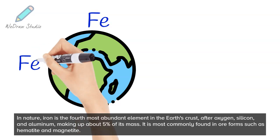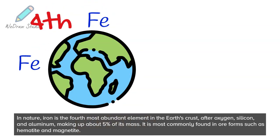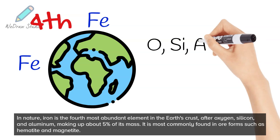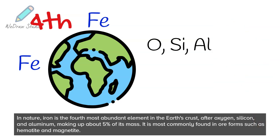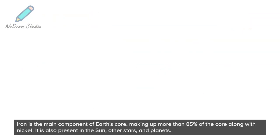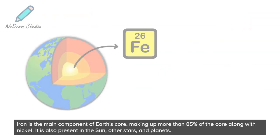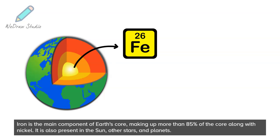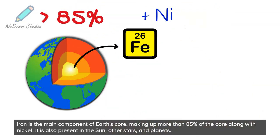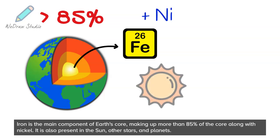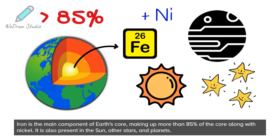In nature, iron is the fourth most abundant element in the Earth's crust, after oxygen, silicon, and aluminum, making up about 5% of its mass. It is most commonly found in ore forms such as hematite and magnetite. Iron is the main component of Earth's core, making up more than 85% of the core, along with nickel. It is also present in the sun, other stars, and planets.